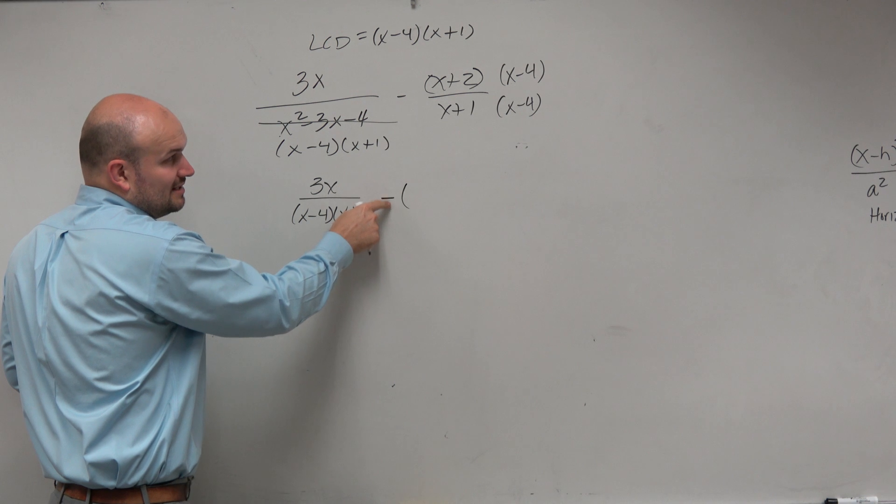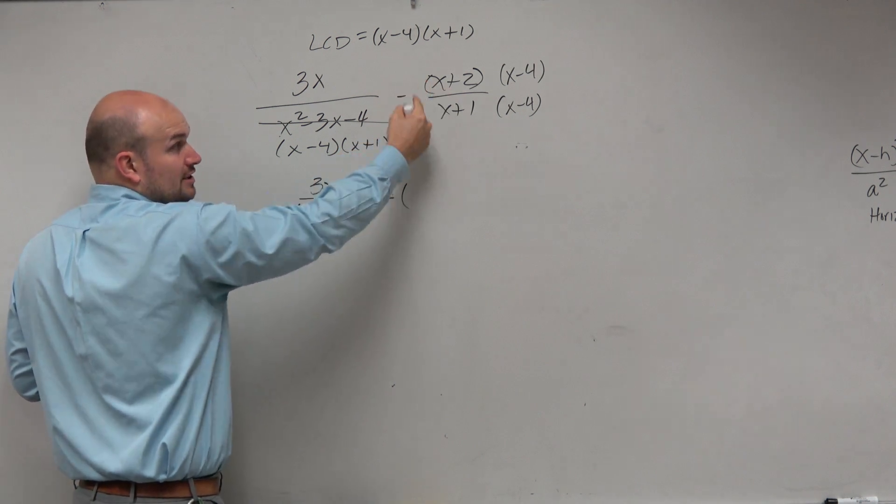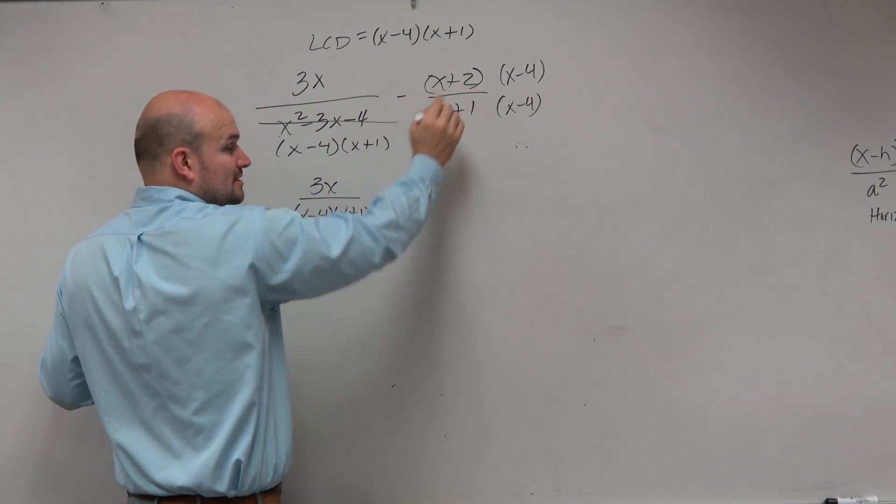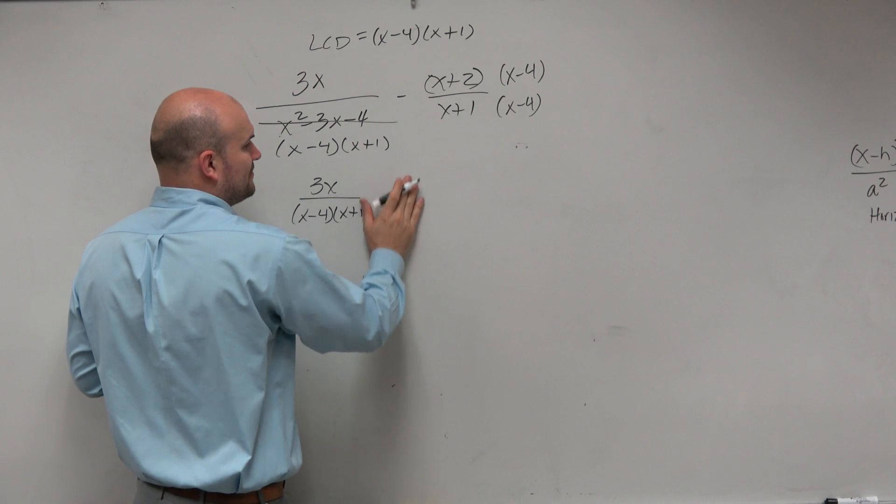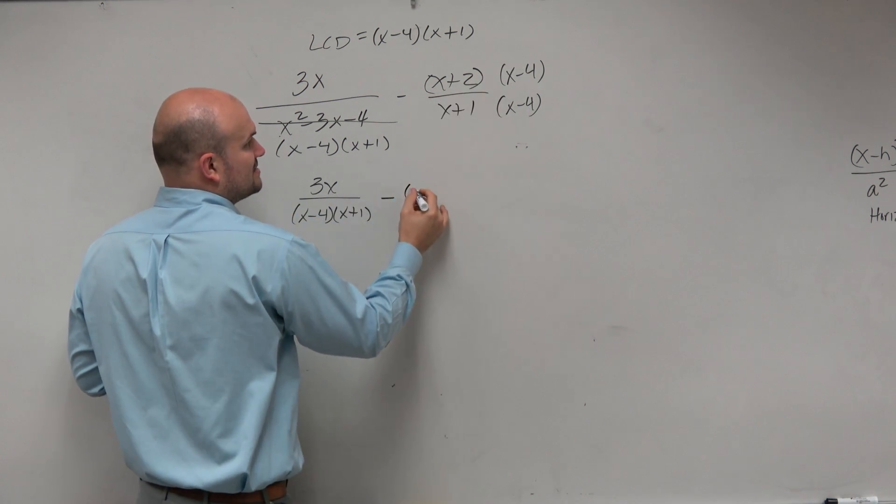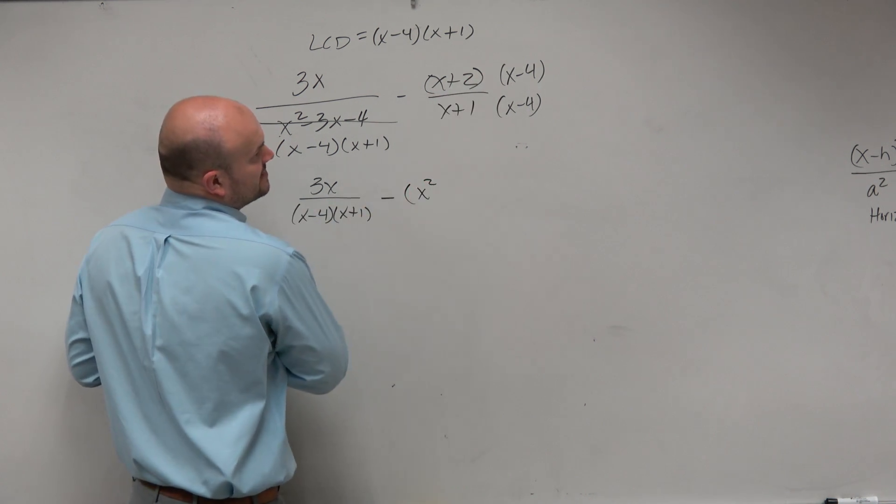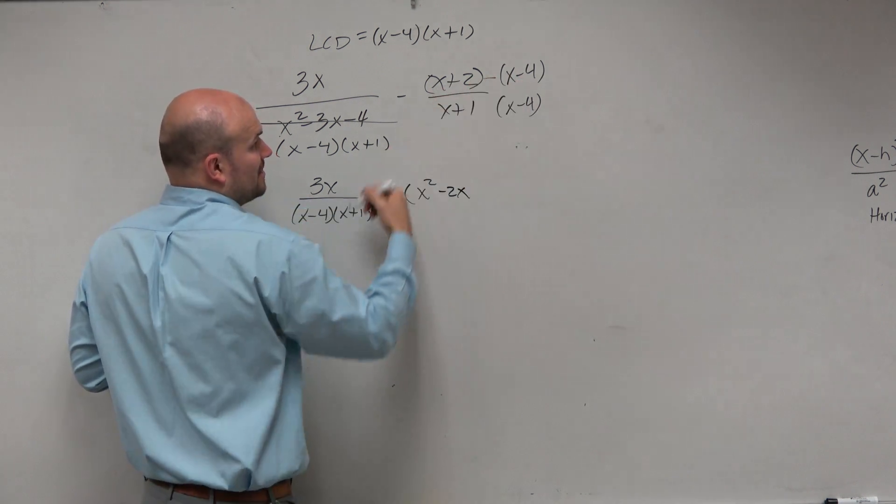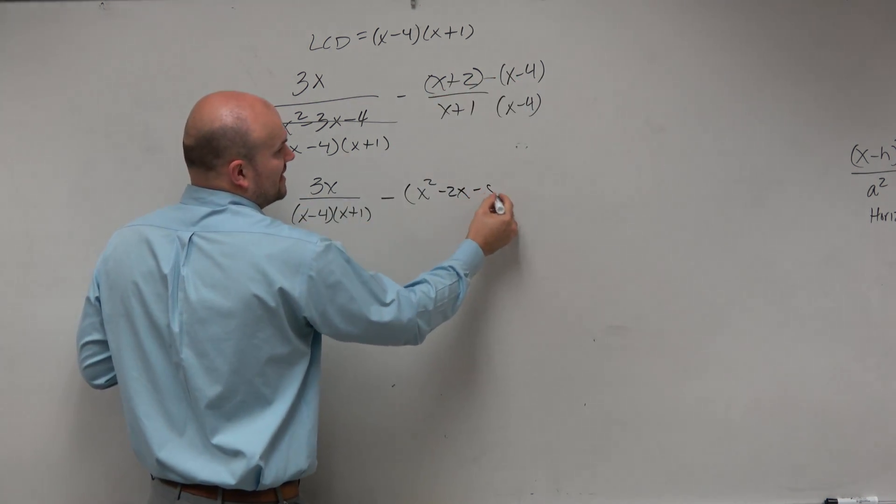Because remember, you're subtracting this quantity. You're not subtracting the x. You're subtracting the whole rational expression. So when I multiply this out, let's see, I get x squared. That's going to turn to a negative 2x. I'm multiplying this in my head. And that's going to be minus 8.